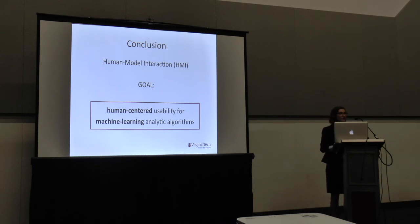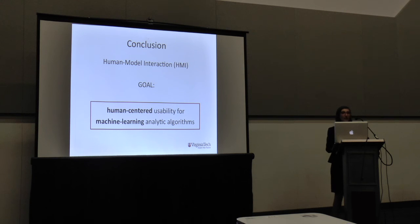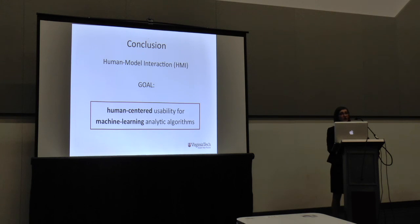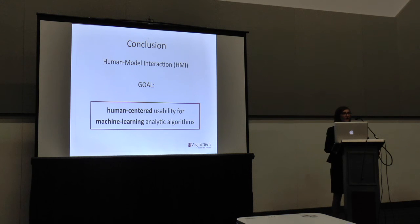In conclusion, this work supports the idea of human-model interaction — really looking at how the user is involved in the model and how we can, in my work, hide the model but let the model be useful for a user. We need to match up the interactions we design for these models to make sure they make sense to the user and are intuitive, but also stay true to the model parameters and constraints. If we don't keep those intact, the model won't work correctly. We need to focus on both and work them together. Thank you.